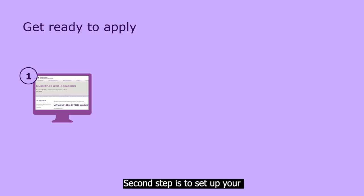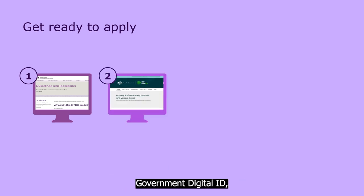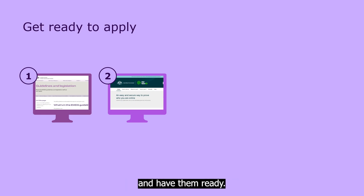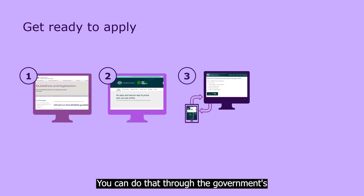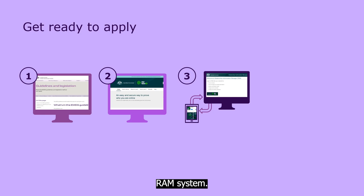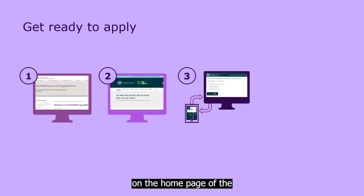Second step is to set up your government digital ID, or get the details of your ID and have them ready. Next, connect your digital ID to your business's ABN. You can do that through the government's RAM system. There's a link to the RAM system on the homepage of the EMDG online portal.